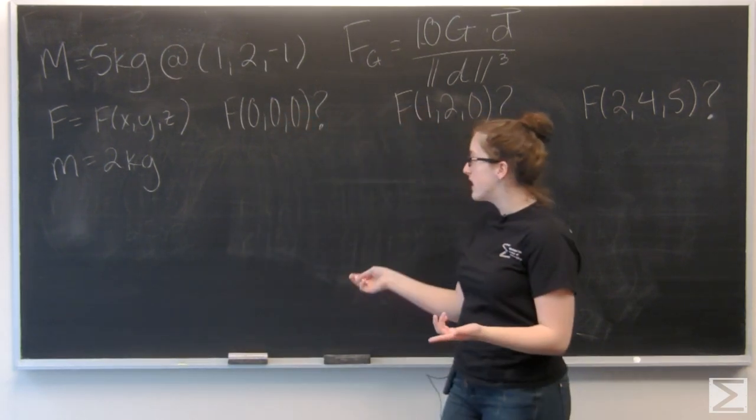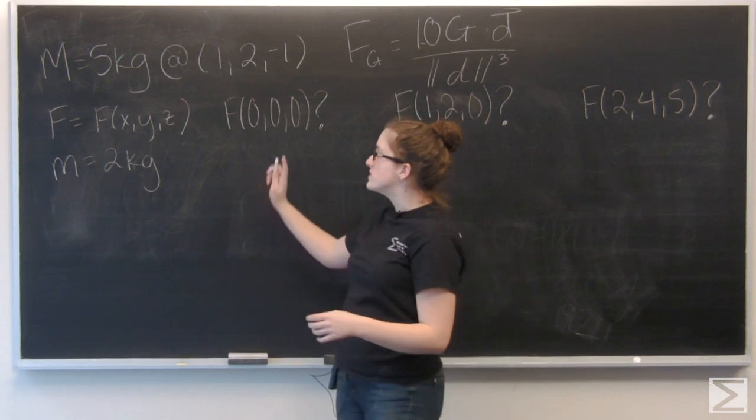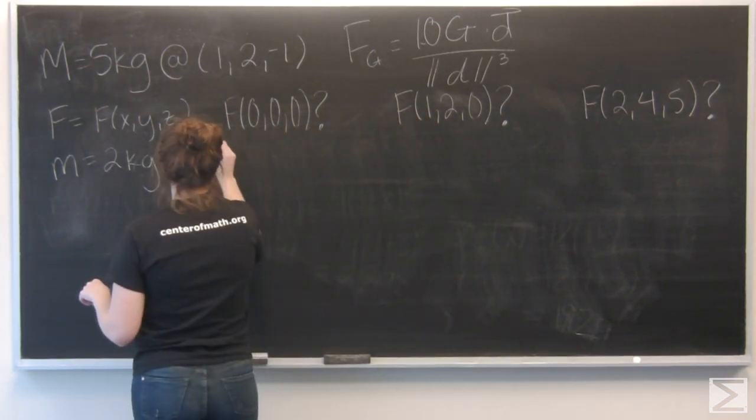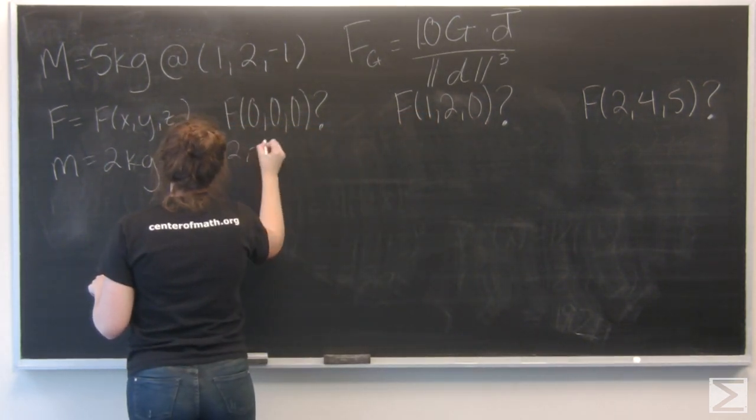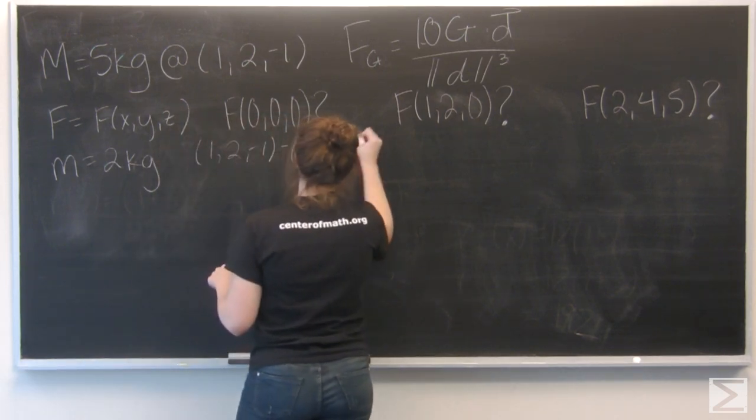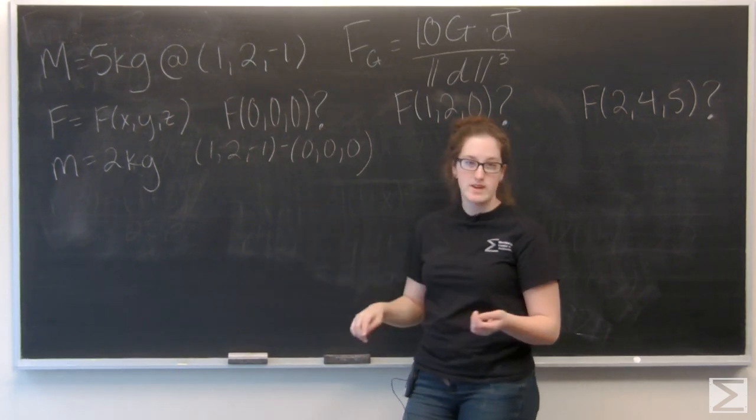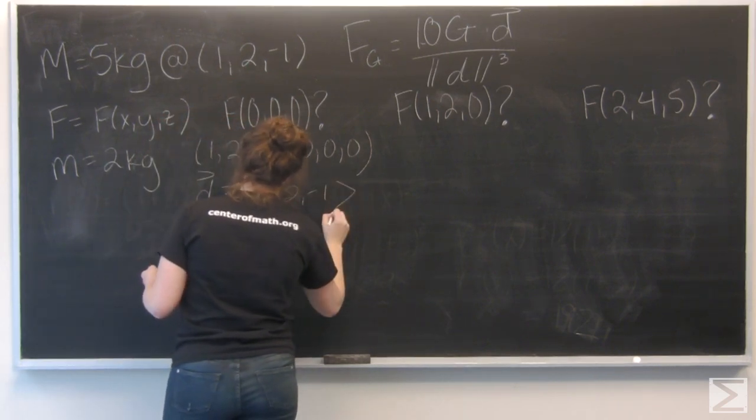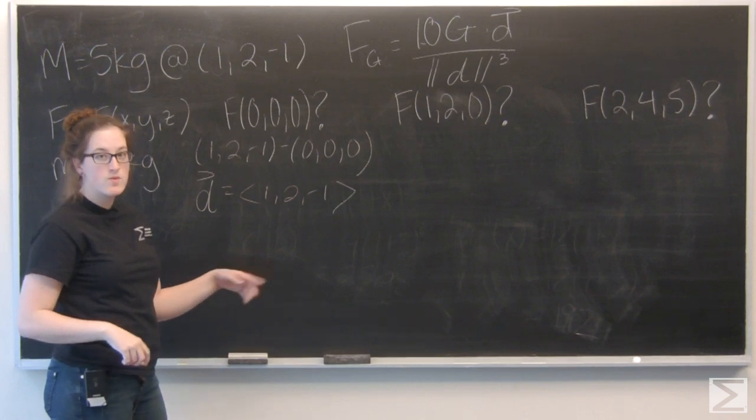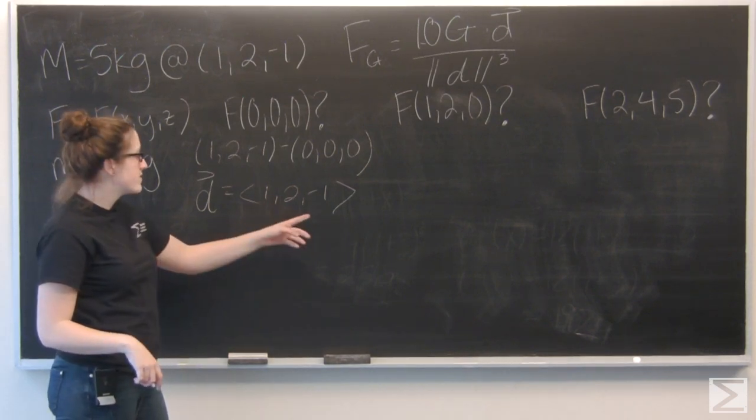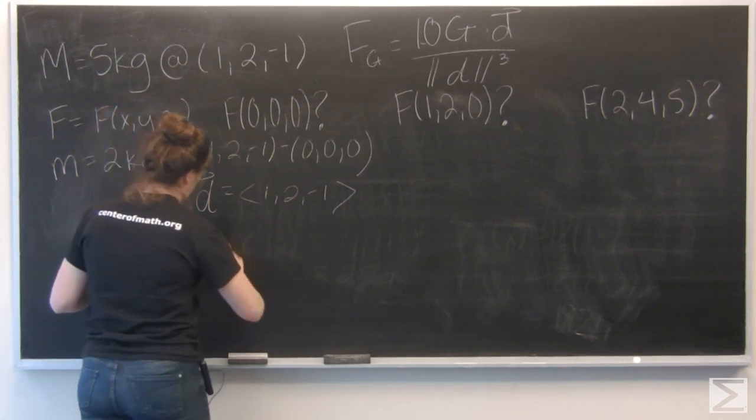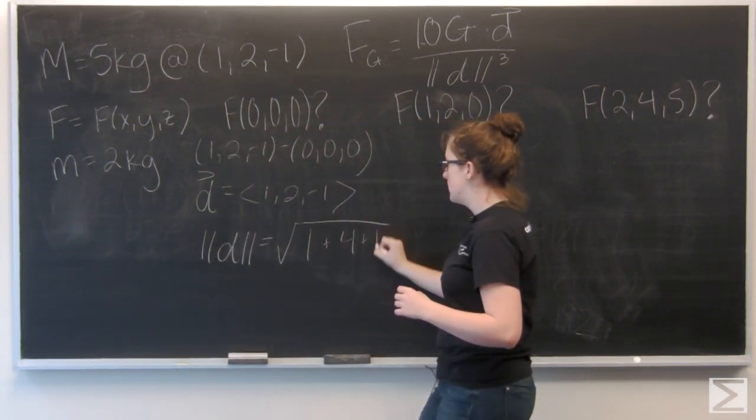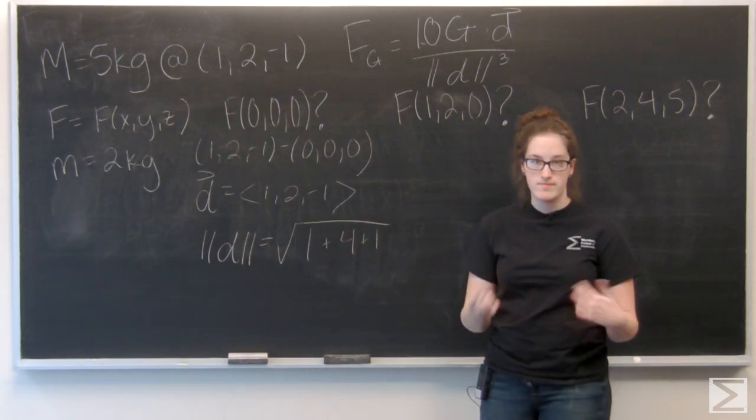Let's start with the origin. So to find the vector, I'm going to subtract this location from the location of big M. So here that's pretty easy because the vector is just going to end up being (1, 2, -1). And now let's find its magnitude. Well remember that the magnitude is the square root of the sum of the squares of each term in the vector. So here I have the square root of 1 plus 4 plus 1, so the square root of 6.